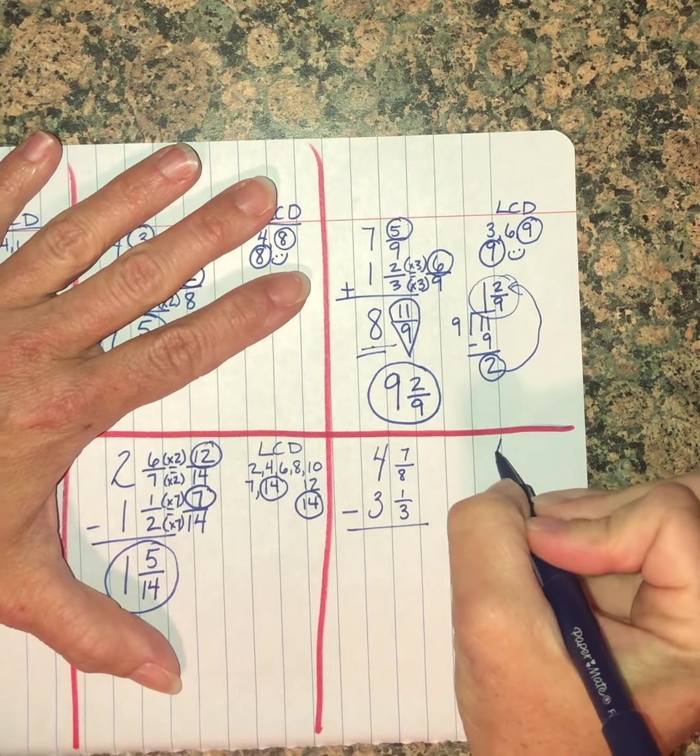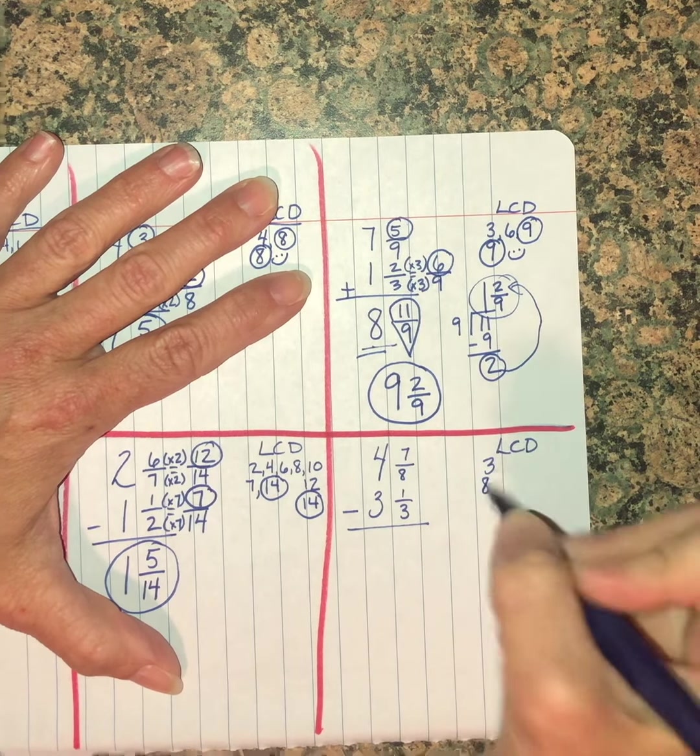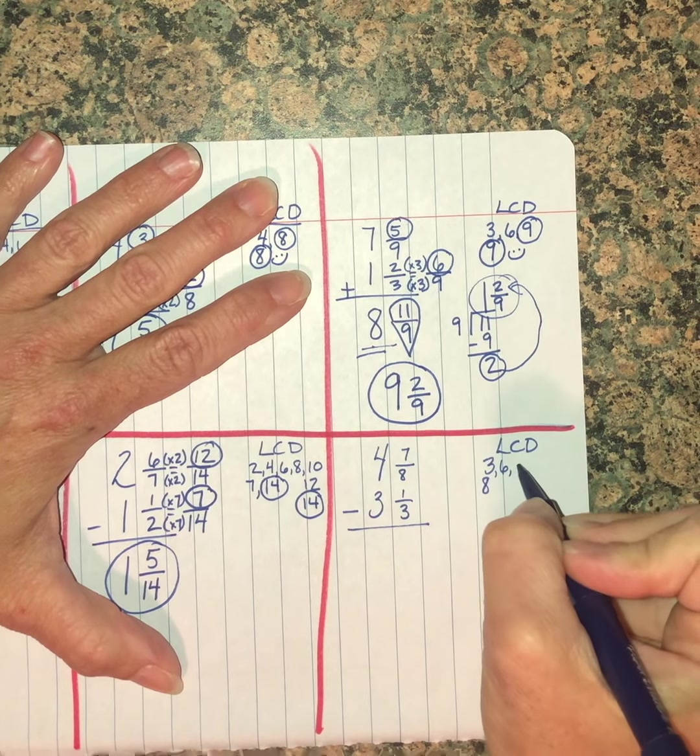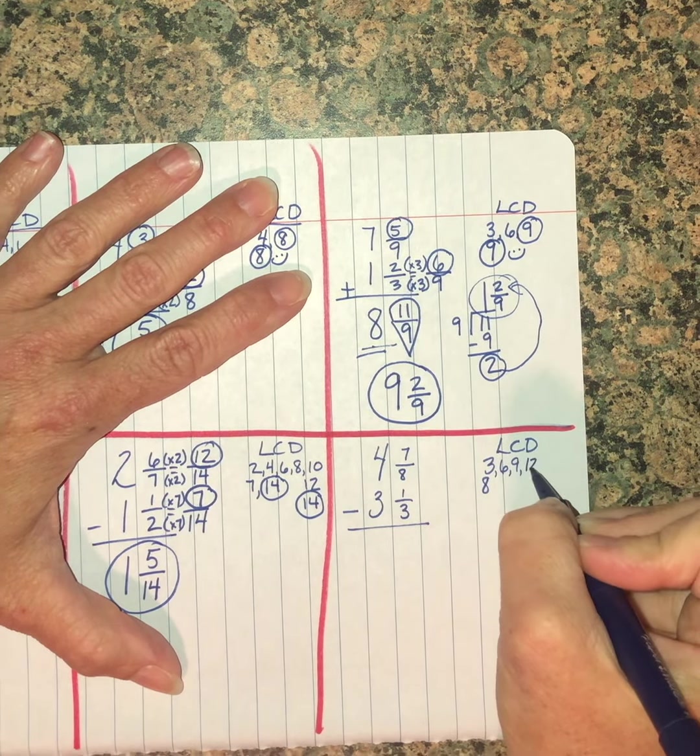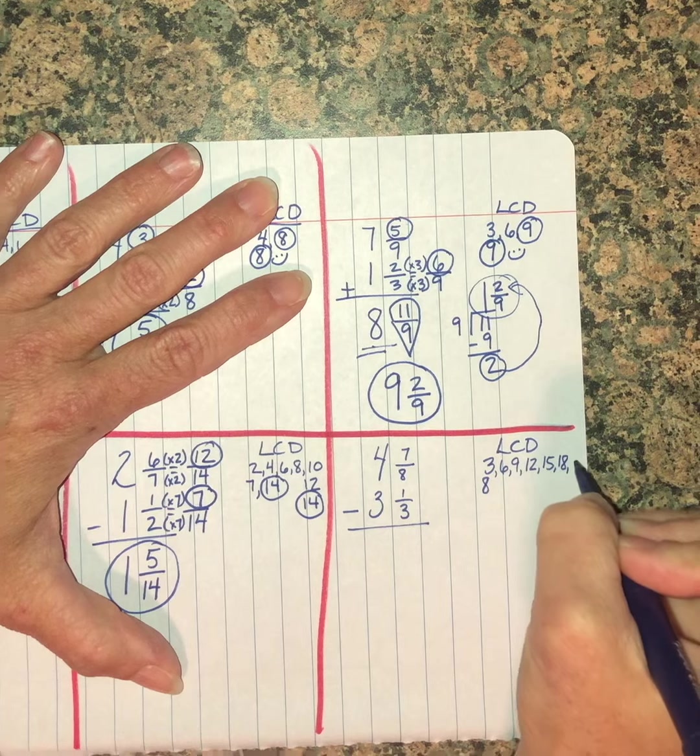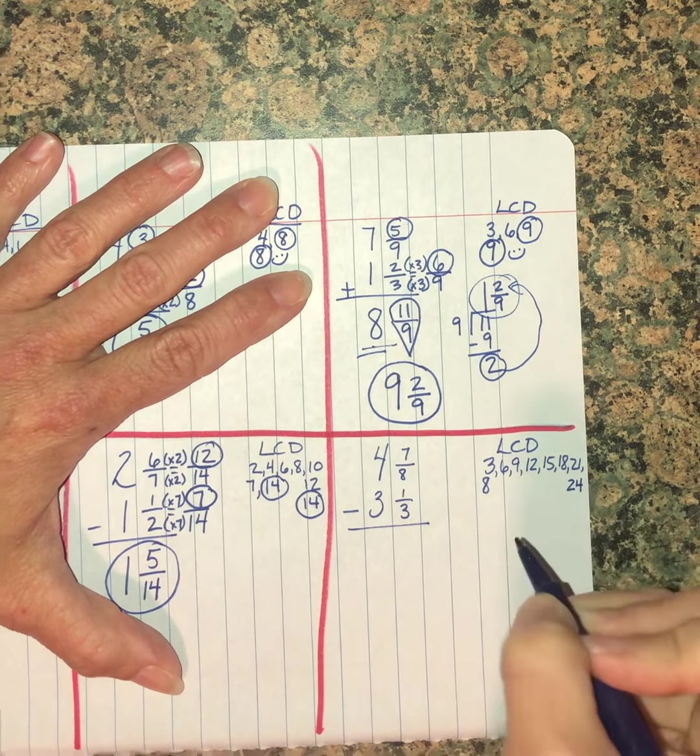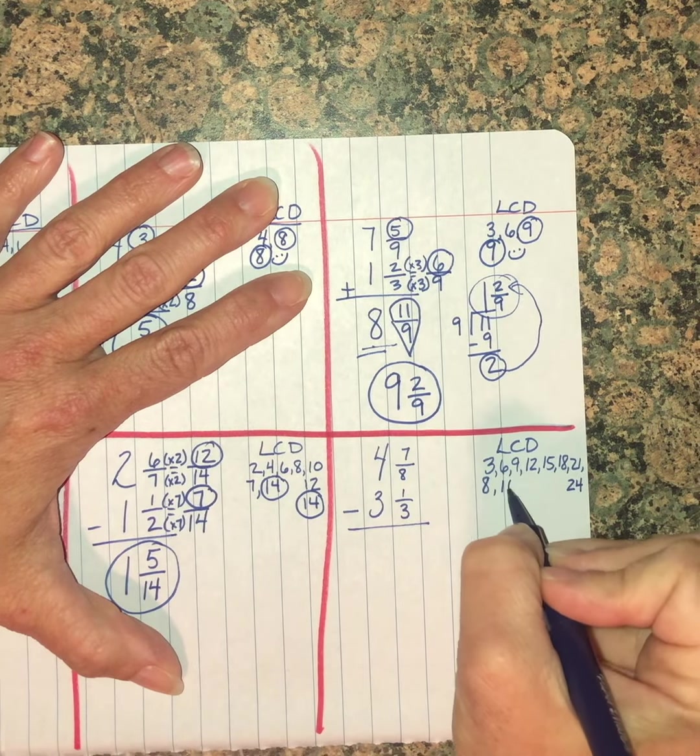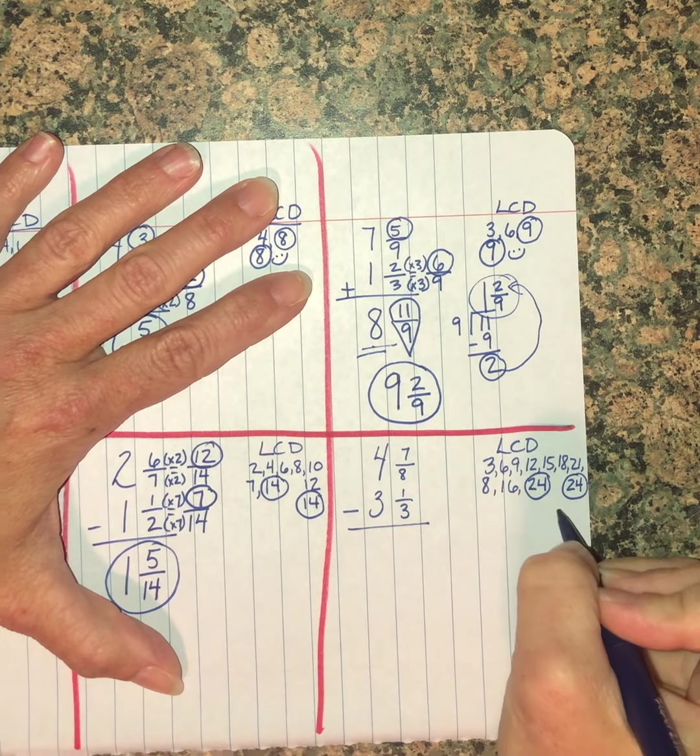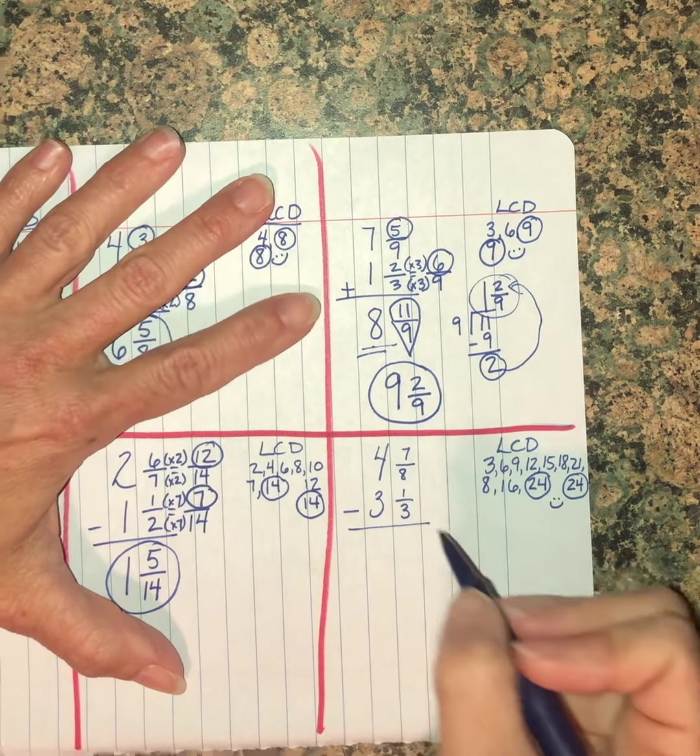Last one. This one we're looking for a least common denominator between three and eight. This one I'm going to go out for a bit. Three, six, nine, twelve, fifteen, eighteen, twenty-one, running out of room, twenty-four. Eight, sixteen, twenty-four. Twenty-four is going to be my least common denominator, so I'm going to have to multiply each fraction by the opposite denominator.